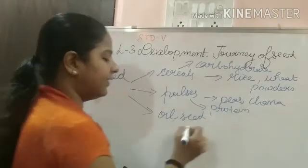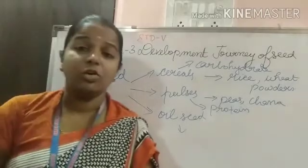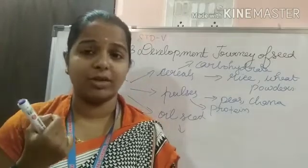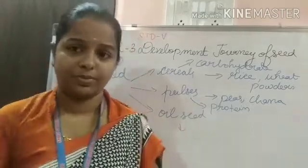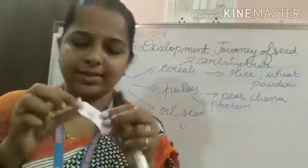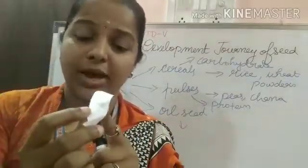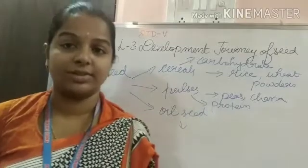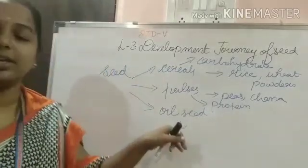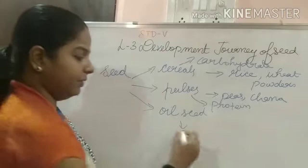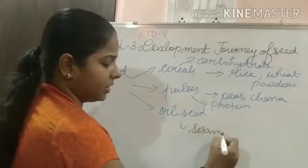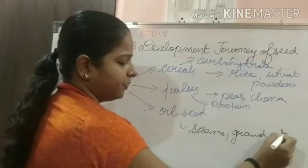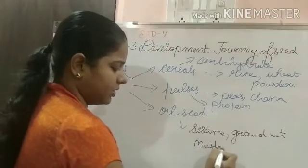Next is oil seeds. Oil seeds can also be divided into two equal halves, but they contain oil. When you break an oil seed on a piece of paper, you can see a small oil patch on the paper. If there are oil patches, then we can say it is an oil seed. Examples are groundnut and mustard.